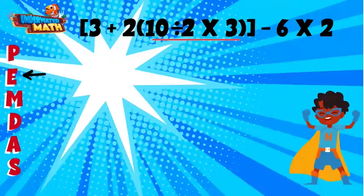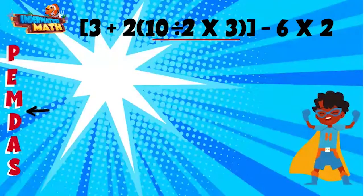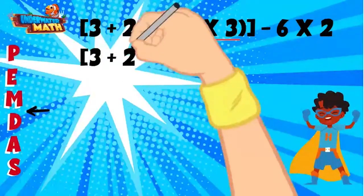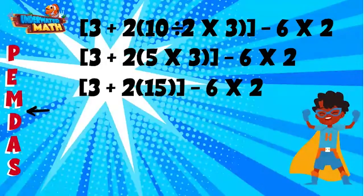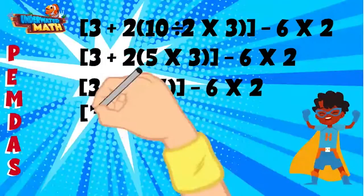We don't have any exponents, so we move to multiplication and division — remember, these happen at the same time from left to right. We have both multiplication and division in the parentheses, but we run into division first: 10 divided by 2 equals 5, so we replace this part in our next line. We still have parentheses showing 5 times 3, which is 15, and we can write our next line. We are still working within our brackets and we have multiplication — a number next to a set of parentheses signifies multiplication.